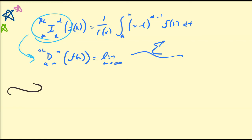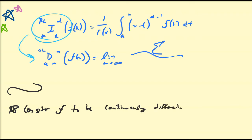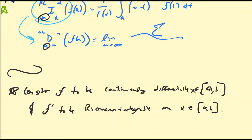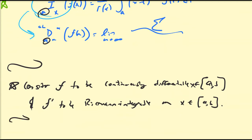Before we start to derive this property, I need to state some basic analytic requirements for the function f. Consider f to be continuously differentiable on some interval a to b, where a is the base point and b is some point in the future, and we're going to consider f prime to be Riemann integrable on the same interval a, b. If you don't have these, then you're not guaranteed that these properties will work.